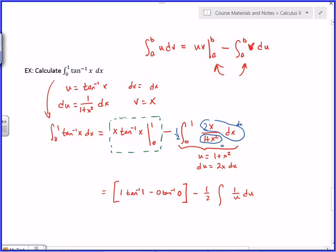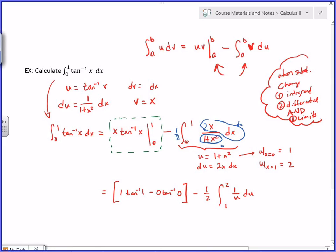Remember when you do substitution on a definite integral, you change three things: integrand, differential, and limits. So what's u at x equals zero? From this formula right there, one. And u at x equals one? Remember I'm just taking these limits and plugging them into the substitution, so I get two. So this is now one to two. Five level when substituting: change integrand, differential, and the limits. One, two, three. I want you to remember that.